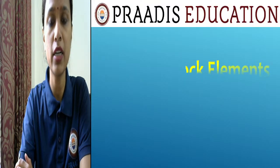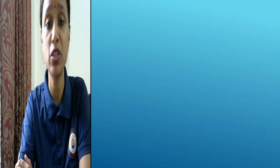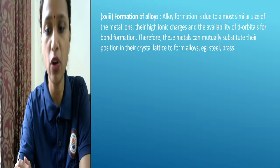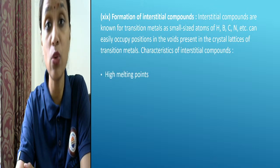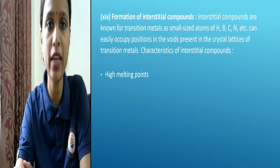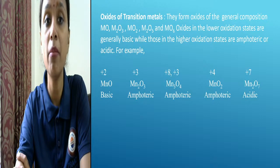In D and F block, we have discussed all the properties: oxidation state, electrode potential, catalytic property, magnetic property, melting and boiling point, why they form colored compounds. Formation of alloys was also discussed — why they form alloys, how they form, and alloy properties are enhanced compared to parent metals. They form interstitial compounds — we saw the properties of interstitial compounds.